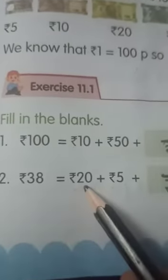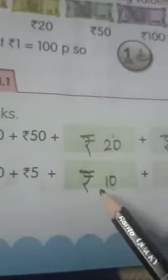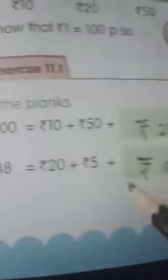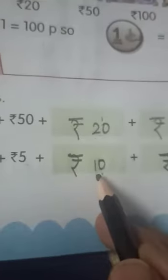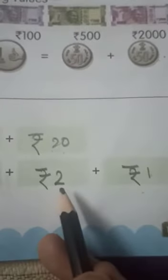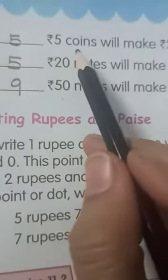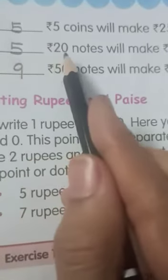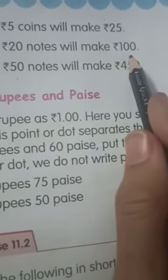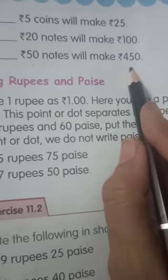For 38: already given is 20 plus 5, that is 25. We need 13 more, so let's write 10, 2 and 1. Now both sides are equal: 20 plus 5 is 25, plus 10 is 35, plus 2 is 37, plus 1 is 38. Similarly, 5 coins of 5 rupees make 25; 5 notes of 20 rupees make 100; and 9 notes of 50 rupees make 450.